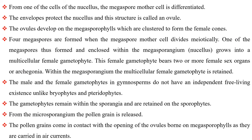From one of the cells of the nucellus, the megaspore mother cell is differentiated. The envelopes protect the nucellus and this structure is called an ovule. The ovules develop on the megasporophylls which are clustered to form the female cones. Four megaspores are formed when the megaspore mother cell divides meiotically. One of the megaspores thus formed and enclosed within the megasporangium grows into a multicellular female gametophyte. This female gametophyte bears two or more female sex organs or archegonia. The multicellular female gametophyte is retained within the megasporangium. The male and the female gametophytes in gymnosperms do not have an independent free-living existence, unlike bryophytes and pteridophytes. The gametophytes remain within the sporangia and are retained on the sporophytes.